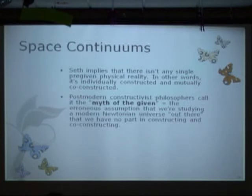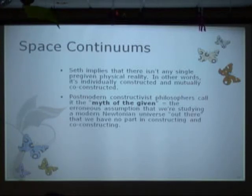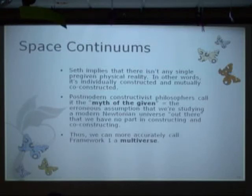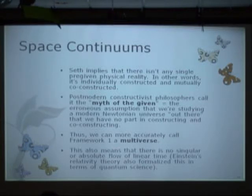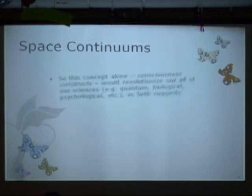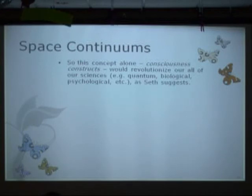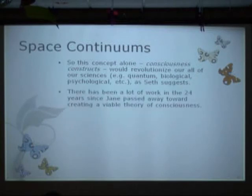Postmodern constructivist philosophers — I know that's a mouthful — call this the myth of the given: this erroneous assumption that we're studying an out-there, fixed, physical thing, and if we can just break it down into its parts like Humpty Dumpty, we can build it back up again. No, we can't. So it's more accurate to consider framework one a multiverse — just framework one itself. I believe framework one is massively parallel, and that would help to explain these probable selves and how they function within there. This also means there's no singular absolute flow of time. So this concept alone — that consciousness constructs, which Seth hammers on — would revolutionize all of our sciences. And unfortunately, those of us with academic backgrounds know that we're still pretty much waiting for that to happen. And it is happening, slowly but surely.